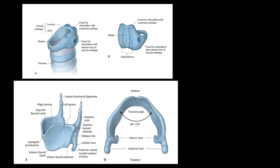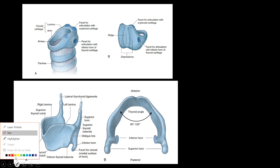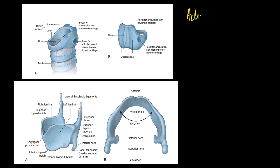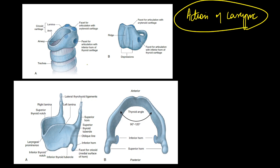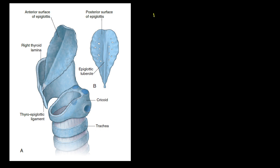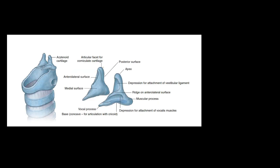Hello guys, welcome back to my channel. I am Dr. Himanshu Gupta, and in this short revision video we are going to revise the actions of the muscles of the larynx as well as their nerve supply. The larynx is made up of few cartilages. Unpaired cartilages include the thyroid cartilage, cricoid cartilage, and epiglottis. The thyroid cartilage, cricoid cartilage, and the base of arytenoid are made up of hyaline cartilage. The epiglottis, corniculate, and cuneiform cartilages are made up of elastic cartilage.